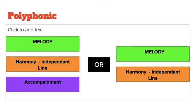There are things you may want to talk about when analysing texture. At the multi-structural level, you identify what textures are used — for example, homophonic, monophonic, polyphonic, thick homophonic, or thin polyphonic. At the relational level, you talk about where the different textures are in the music and what instruments play which texture. For example, you might say the violin is playing one melodic line and the viola is playing the contrasting independent line, which makes it polyphonic.